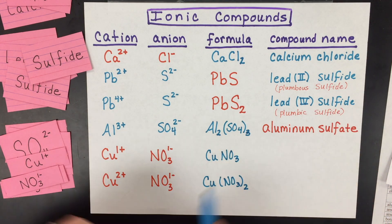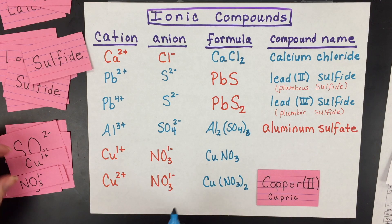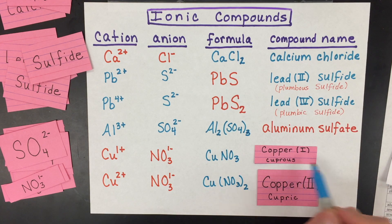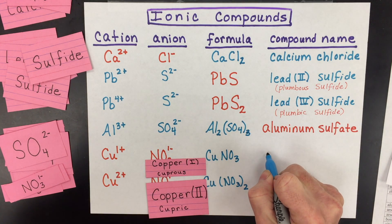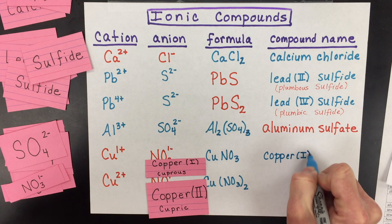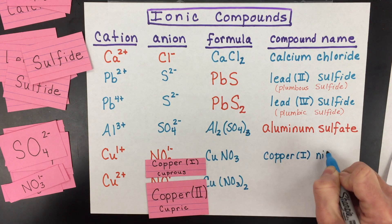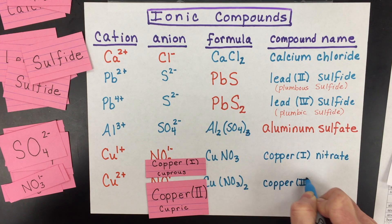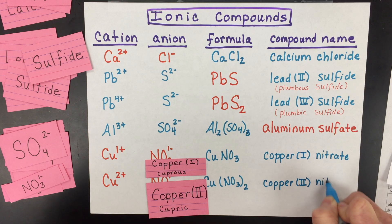Now, copper two is called copper two with the Roman numeral two or cupric, and copper one is called cuprous or with the Roman numeral one. So when you write the names for these, we're going to have to say copper one and then the polyatomic ion was nitrate. Or in this case, we had copper two, Roman numeral two denotes the two plus charge and then nitrate.